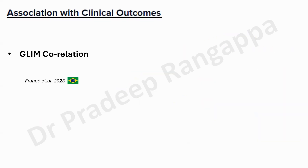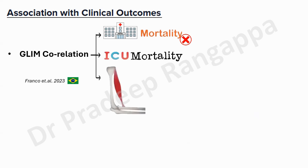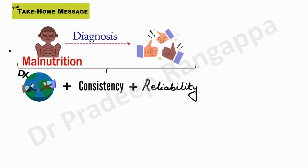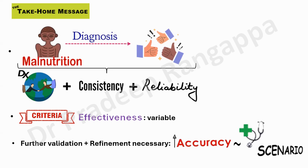Studies from Brazil showed GLIM had a good correlation with ICU mortality but did not show good correlation with overall hospital mortality. It had a decent correlation with sarcopenia and ongoing muscle loss. So GLIM is validated in elderly, hospitalized, and oncology patients. Criteria effectiveness appears variable at this point, and further validation and refinement are necessary to improve accuracy across various clinical scenarios, including ARDS, sepsis, and pure ICU patients.